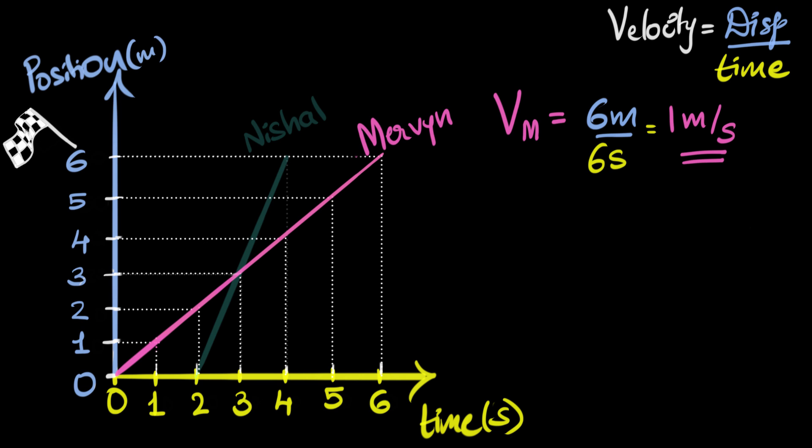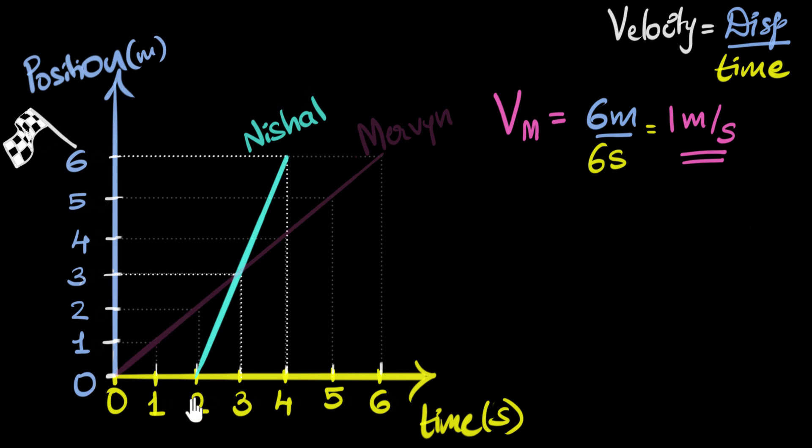Now let's calculate Nishal's velocity. Again, can you give it a try? Can you find out what Nishal's velocity is? Okay, hopefully you have tried. Let's see. We'll do the same thing. Velocity for Nishal would be, again, her displacement by time. So she starts over here and she ends the race over here. So we have to consider this time from two seconds to four seconds.